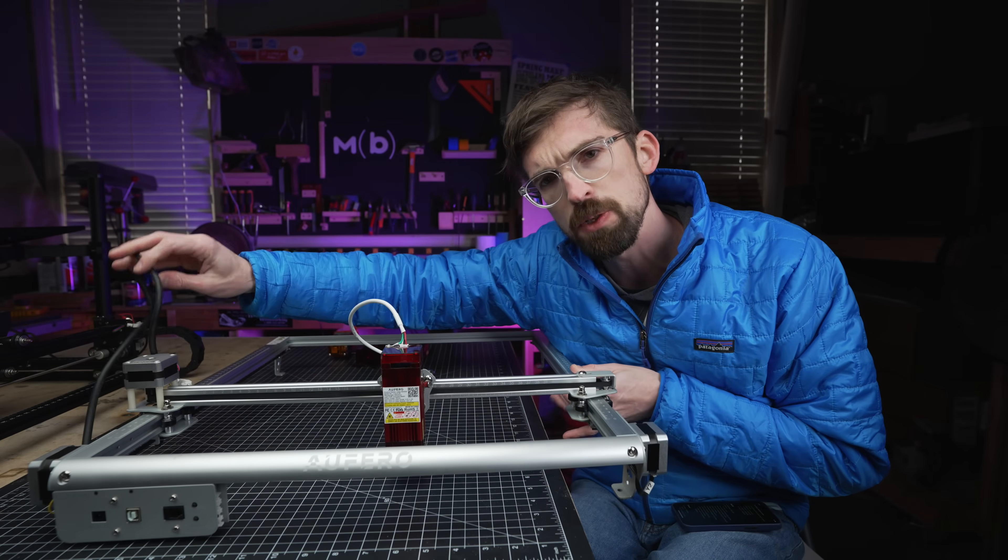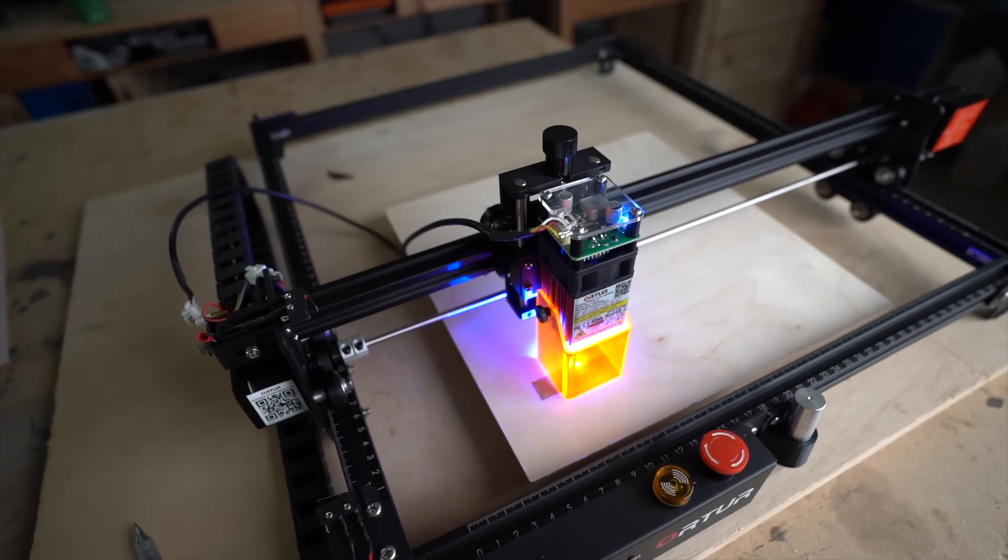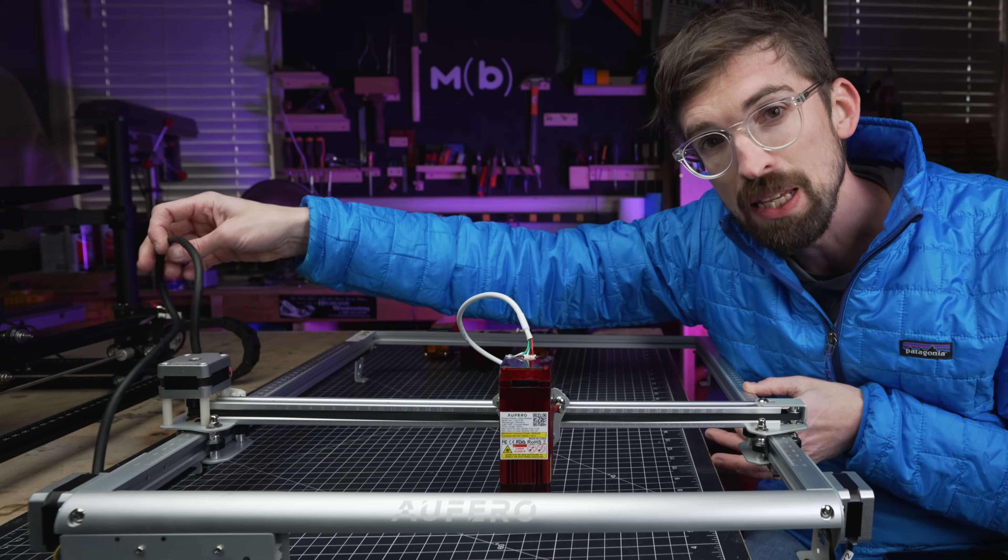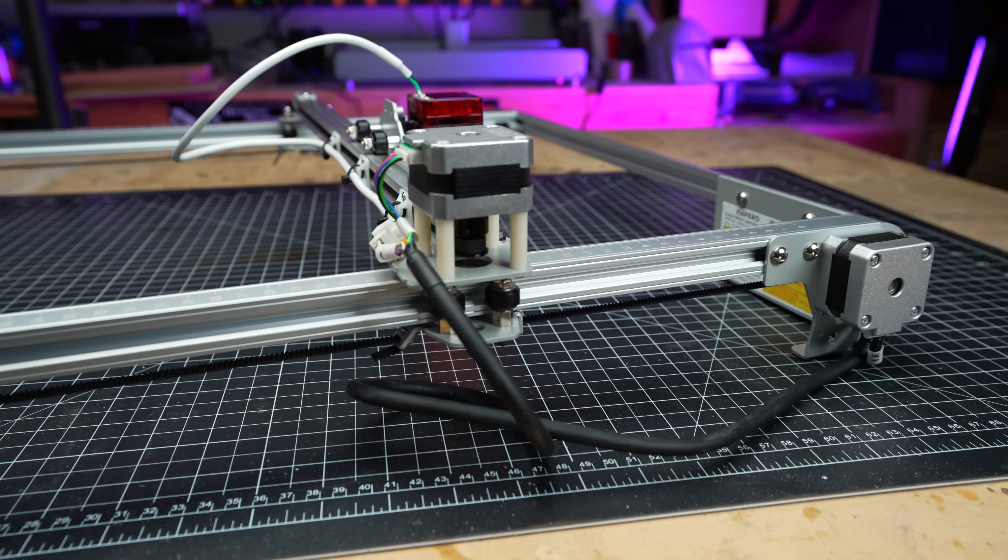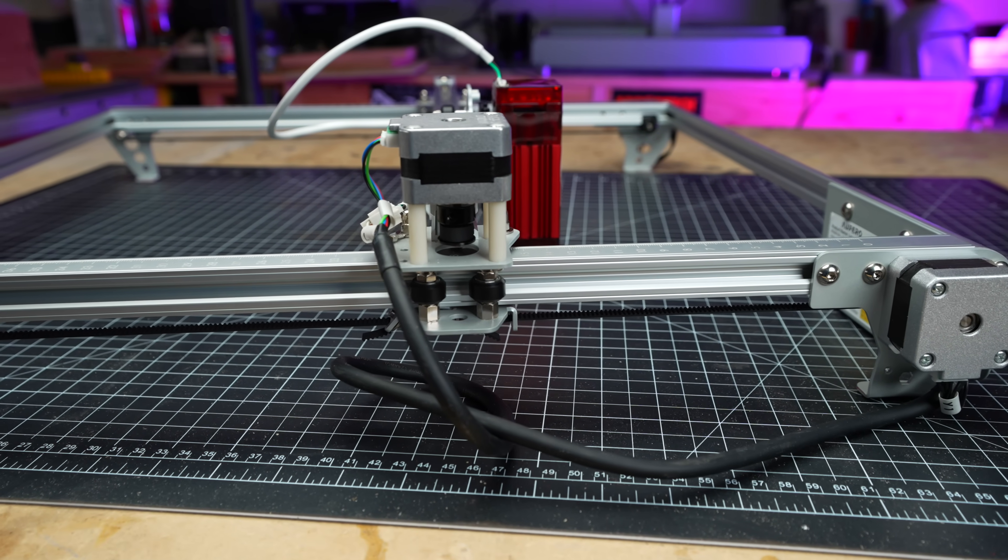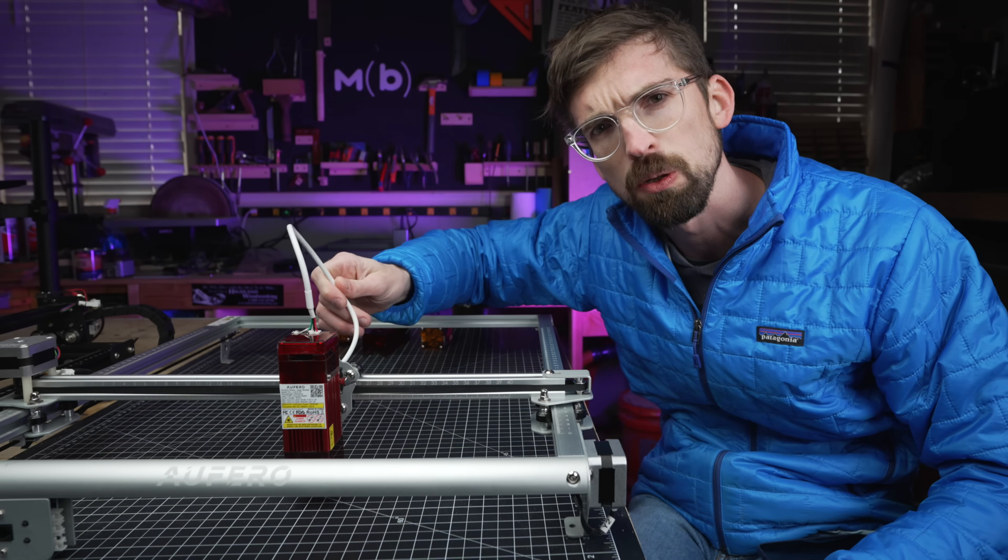Now the cables are another difference between this machine and the Pro. The Pro actually has a track that the cables run in versus these being loose. This never really has been a big issue for me in general, but it's a little bit nicer that the Pro cleans it. But the Pro even has this cable loose as well.